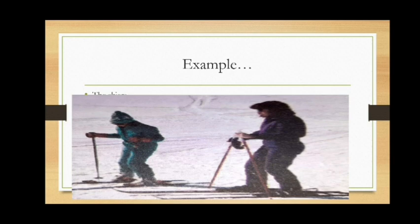Skiers use flat and long skis to slide on snow because the larger the area of cross-section, the less the pressure on the snow — this allows them to slide over snow without sinking. For the same reason, sledges are never provided with wheels, because wheels would increase pressure on the snow.